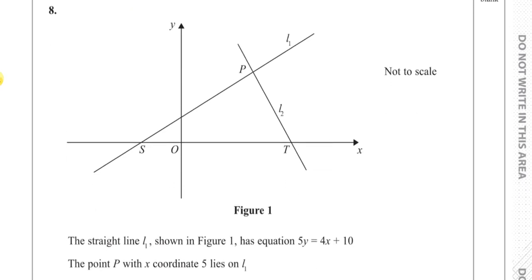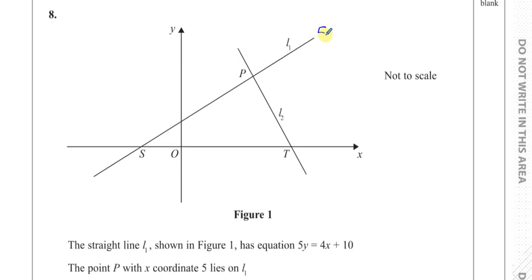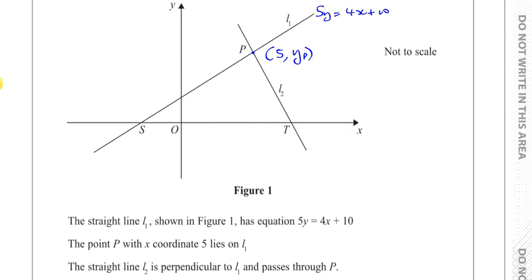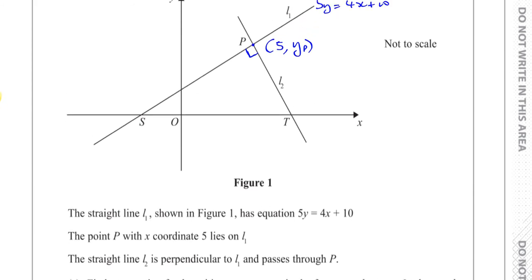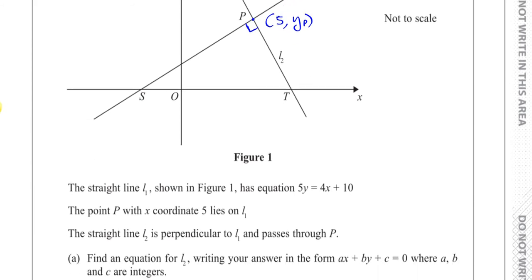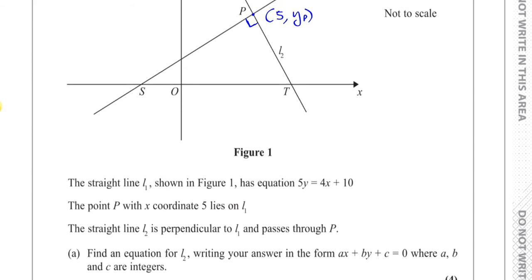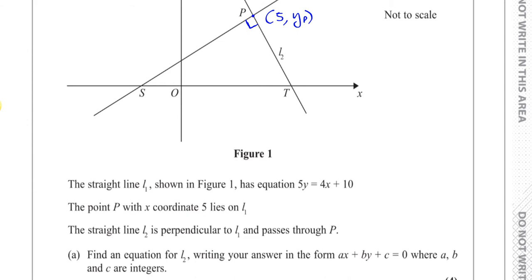We're told the straight line L1 shown in figure 1 has equation 5y equals 4x plus 10. The point P with x coordinate 5 lies on line 1, so this point here has an x coordinate of 5, and the y coordinate we'll just call yp, we don't know what it is right now. And the straight line L2 is perpendicular to line 1, so these are right angles with each other, and passes through the same point P.